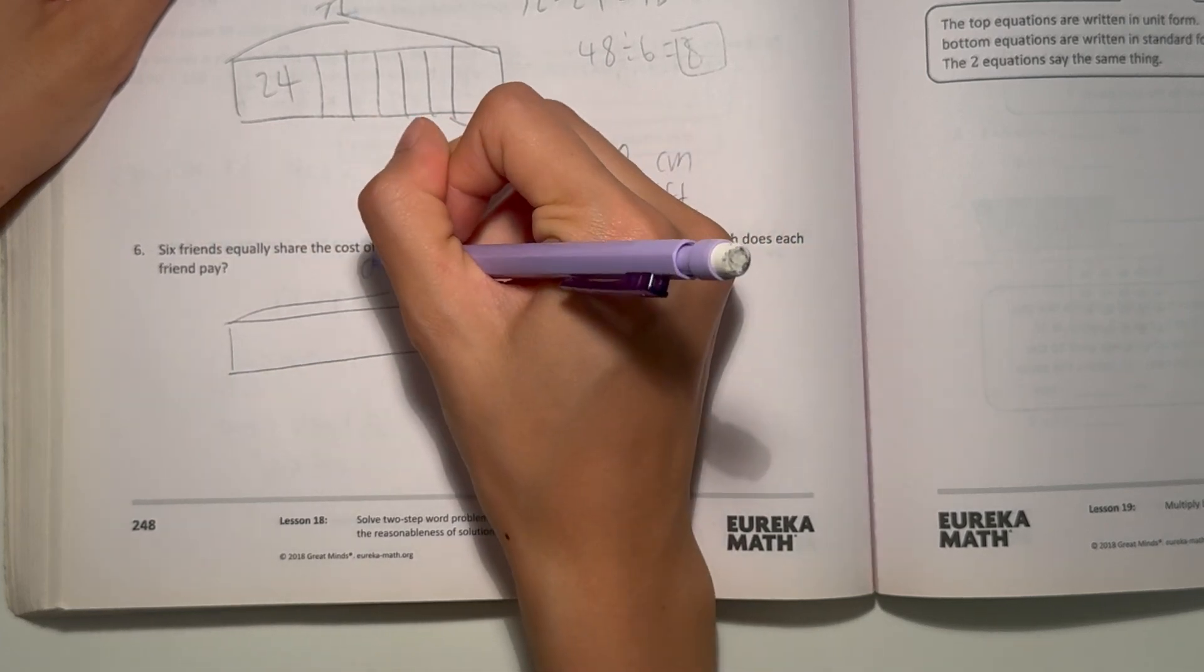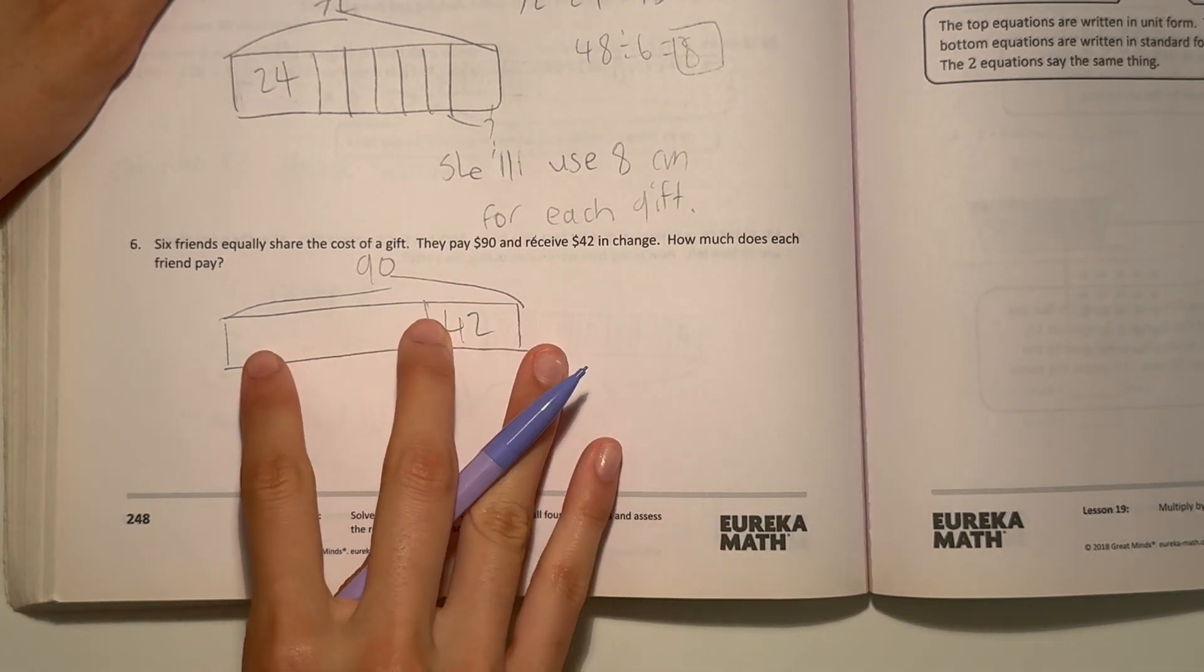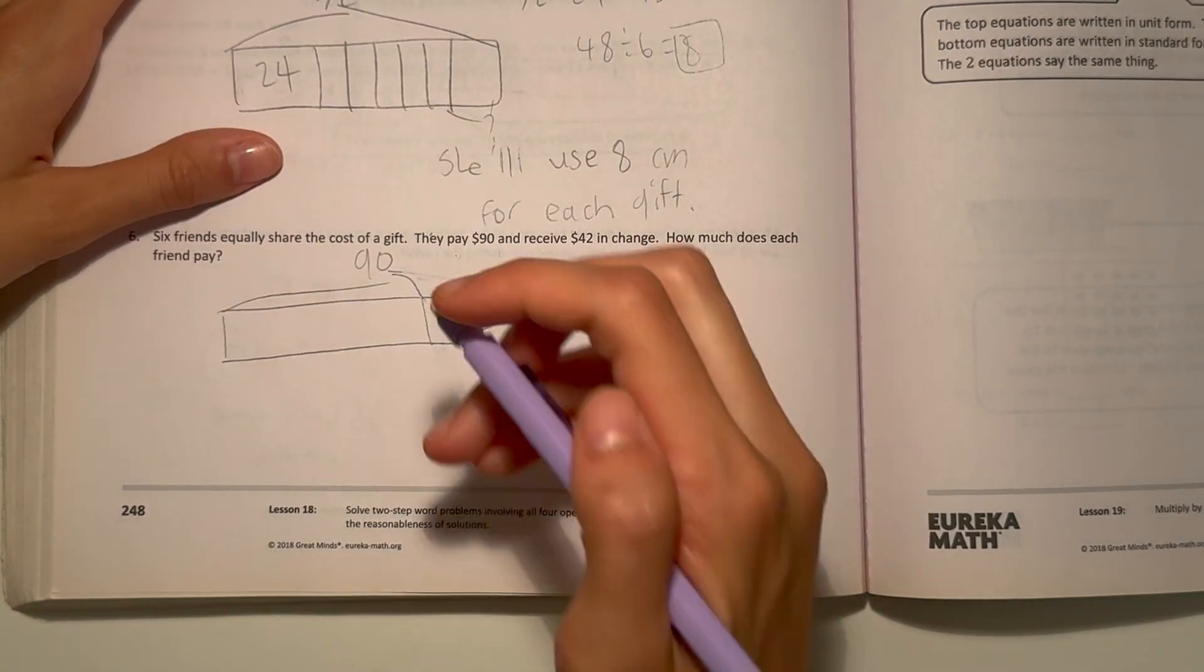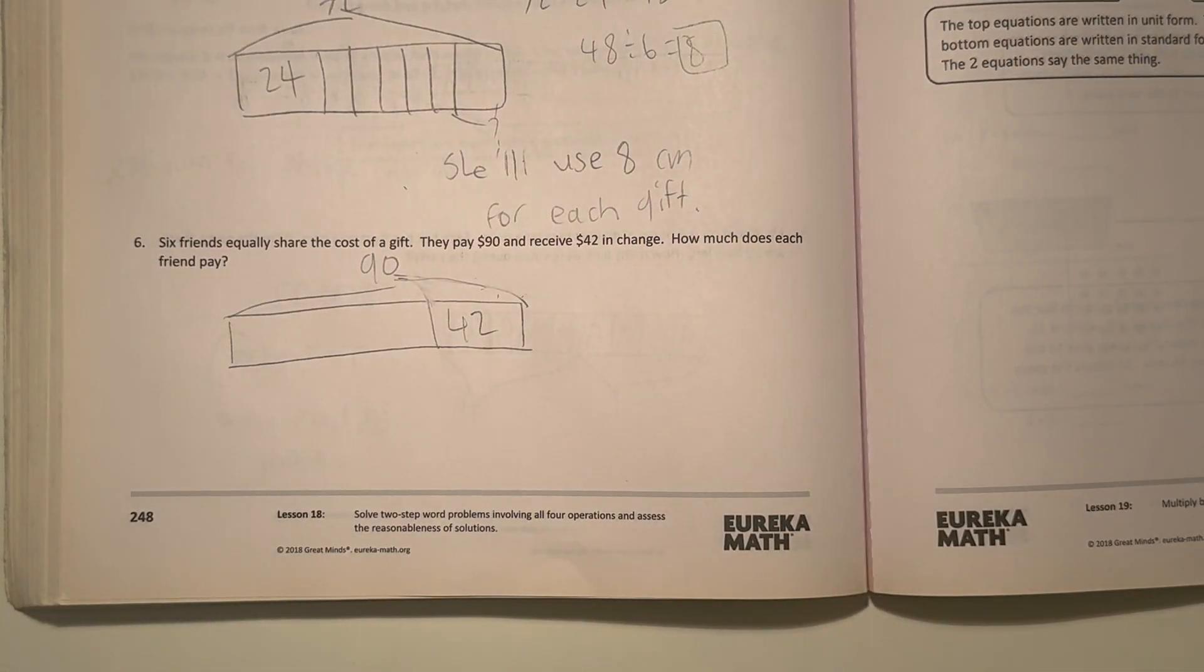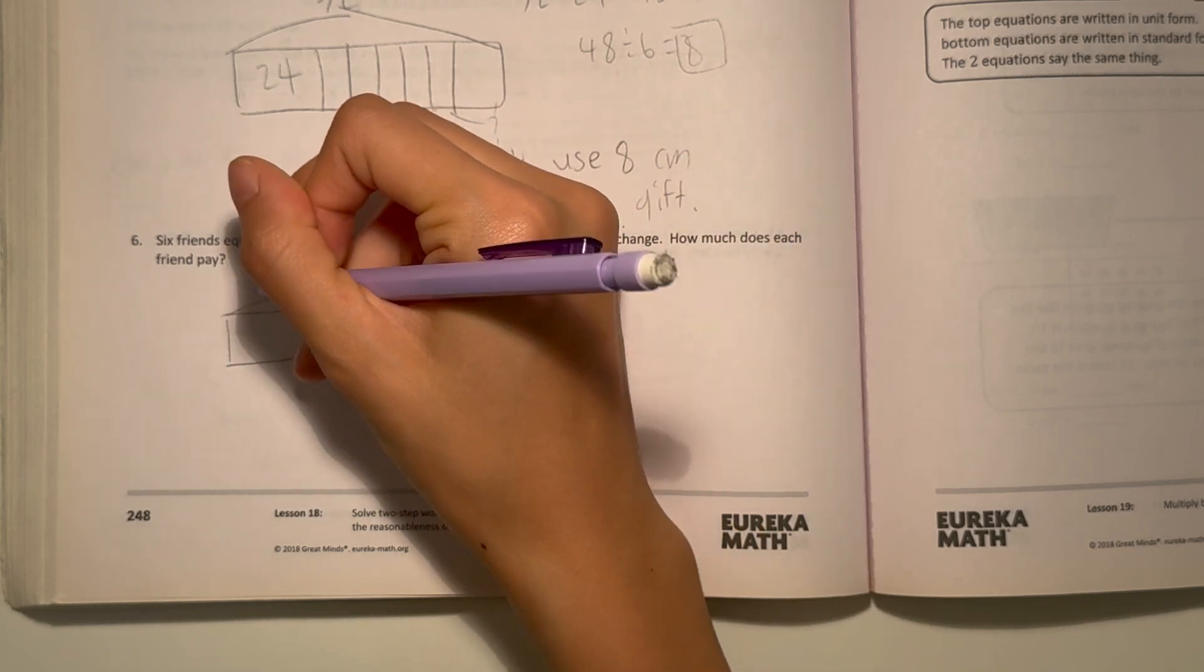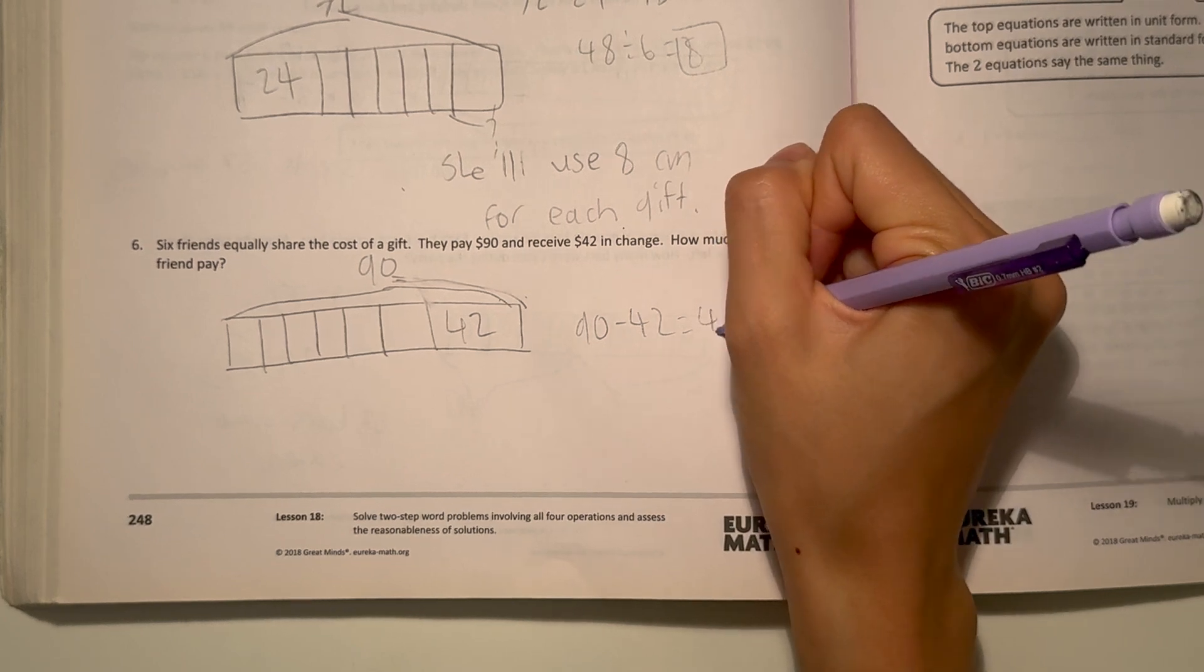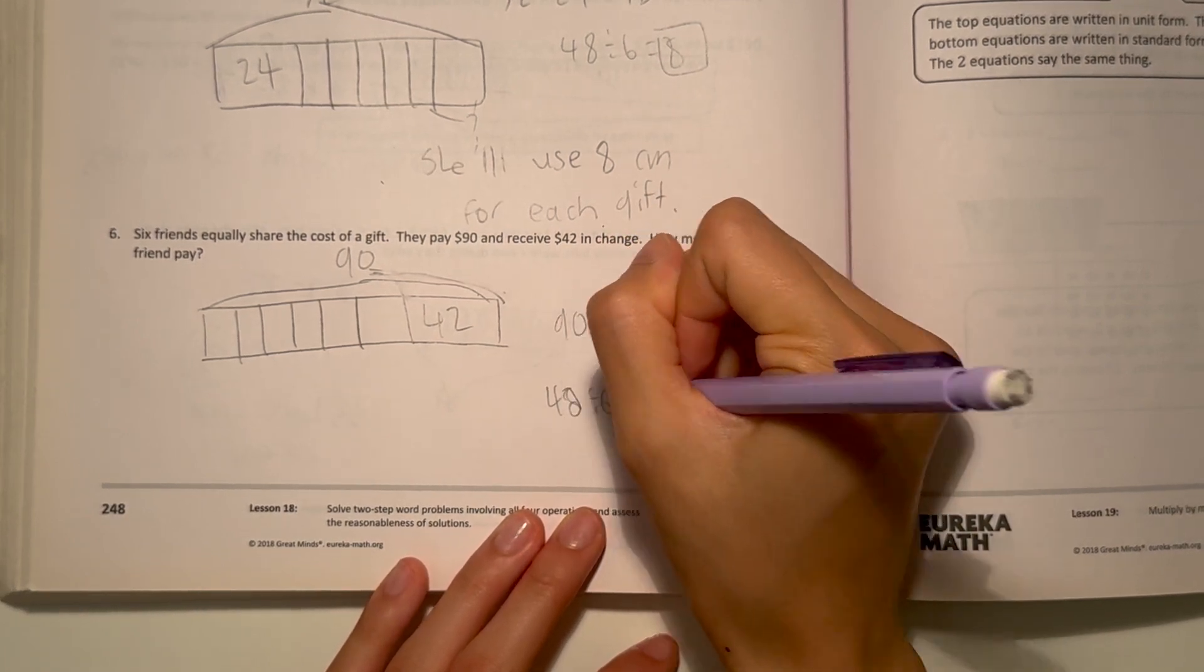So the total they pay was $90. And then they got $42 and change. They pay $90 and they receive $42 and change. So then, how much does each friend pay? Well, $90 minus $42. $90 minus $42, that's $48. And there's 6 friends. So $48 divided by 6 is $8. So that means each friend pays $8.